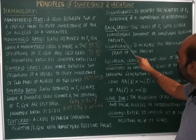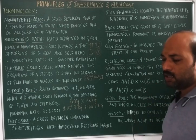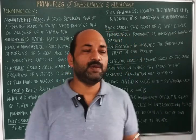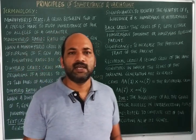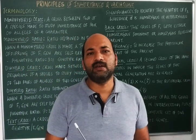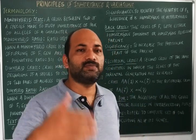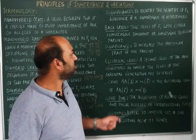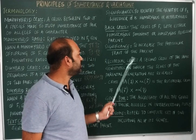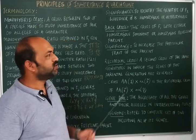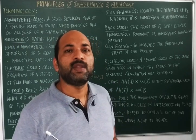Back cross is used to increase a particular trait present in the parent. If one parent has a desirable character and we want it expressed in the next generation, we go for back crosses. This method is generally used in plant breeding.